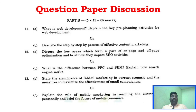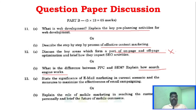In part B of the November December 2023 paper: unit 1 — web development step-by-step process and content marketing; unit 2 — on-page and off-page optimization, how search engines work, PPC and SEM, and the difference between them; unit 3 — email marketing and mobile marketing.